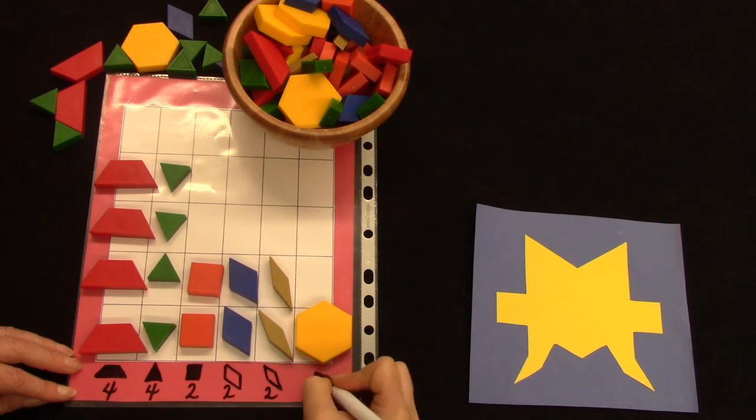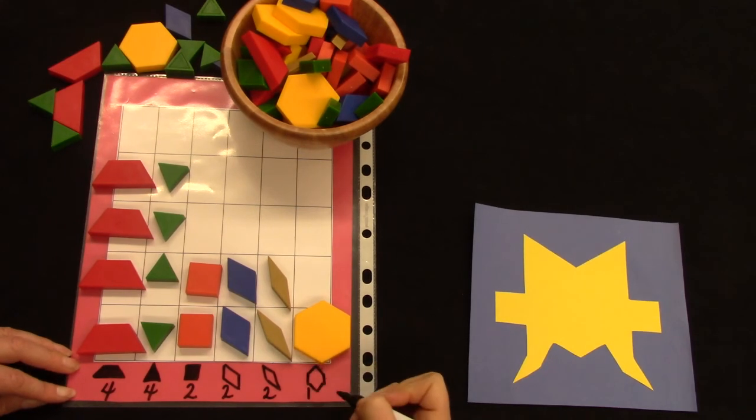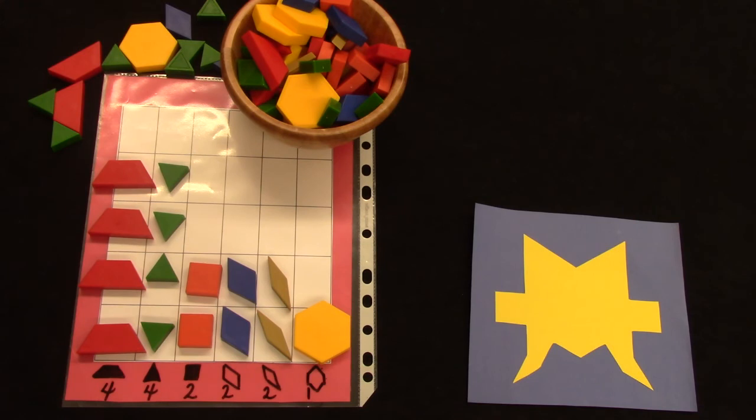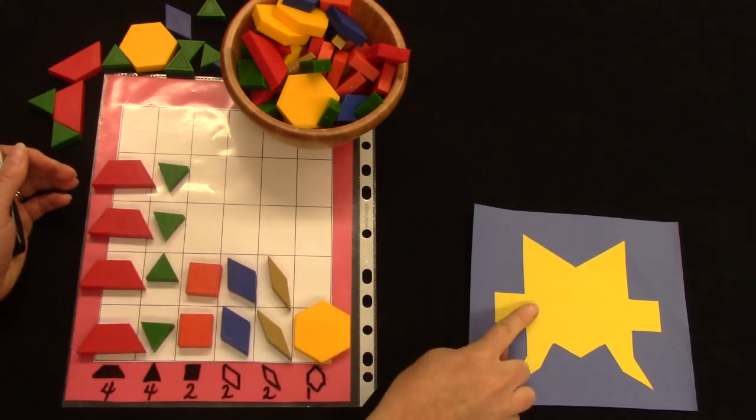And then I have my hexagon. Hexagon has six sides. One. I have made a graph of the shapes that we use to cover our pattern.